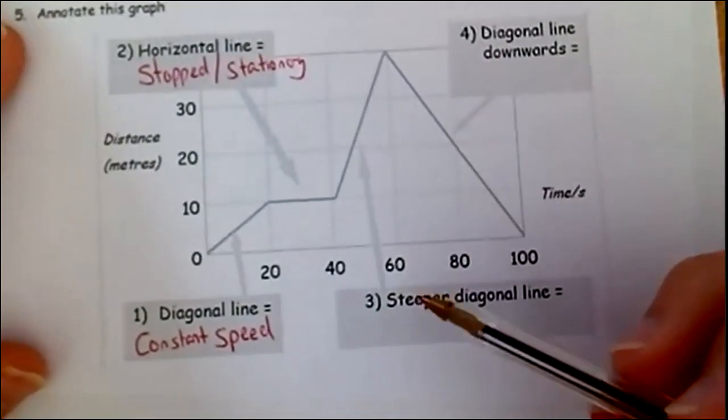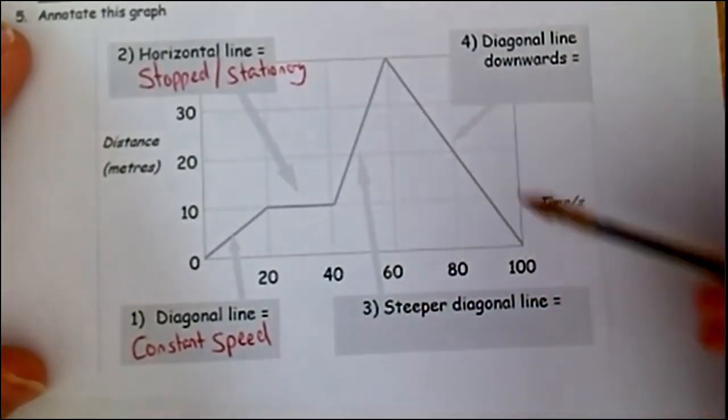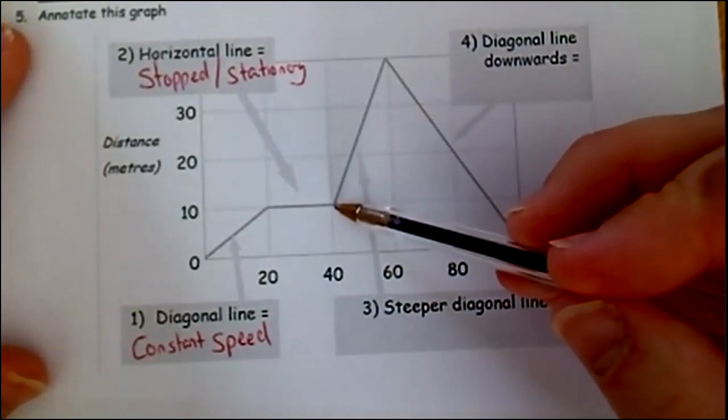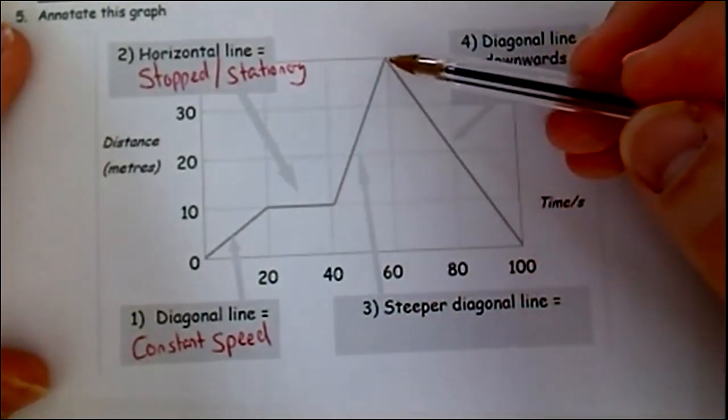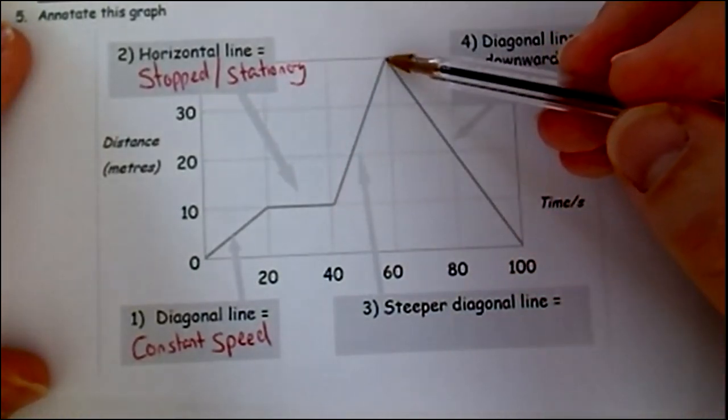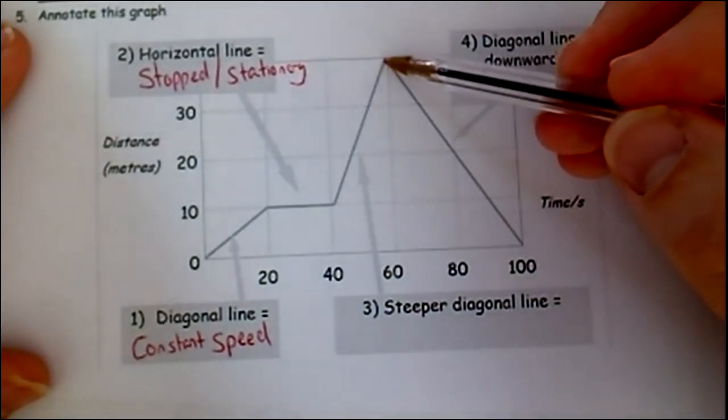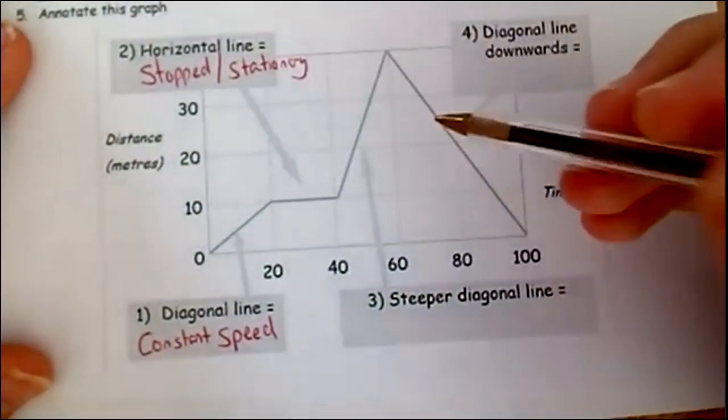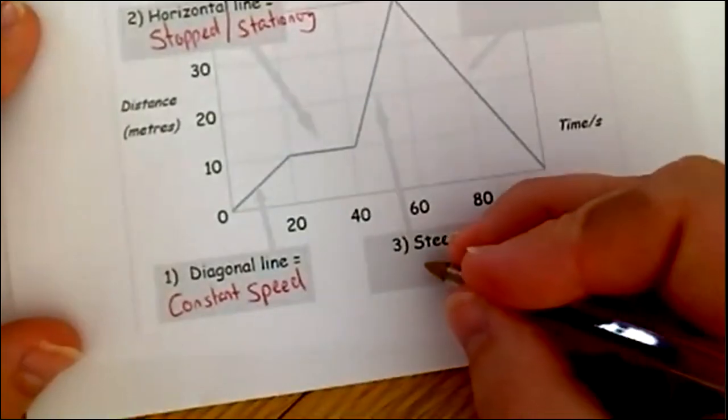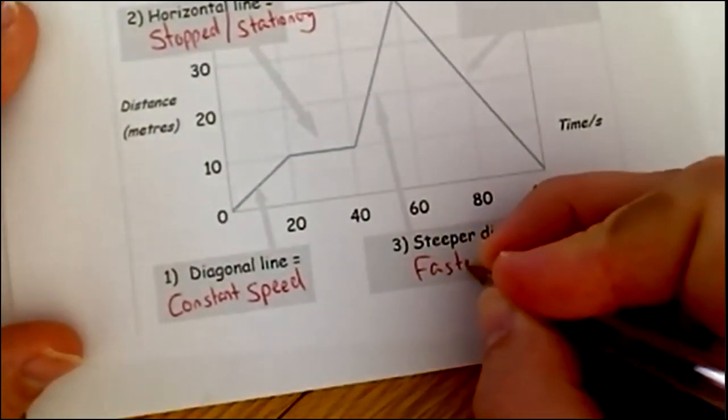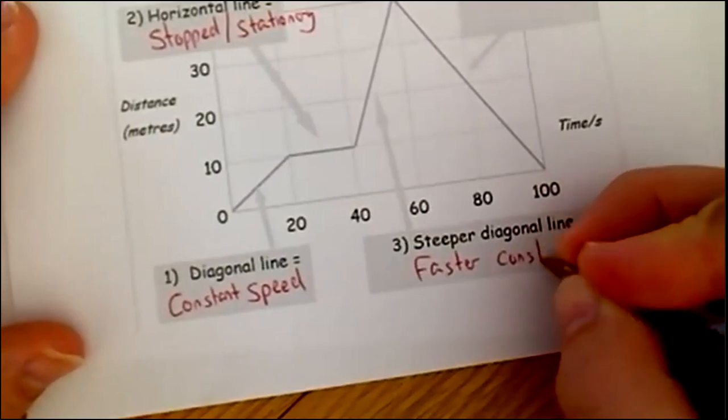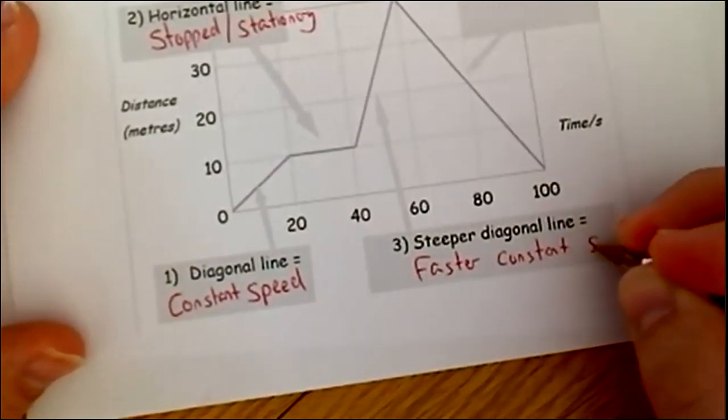Next bit, we've got number three. This is a steeper diagonal line. We go from suddenly, from 40, really steep, up to this bit here, which again is 40, right at the top. This time, they're still moving at a constant speed, but this time, they're moving at a faster constant speed.